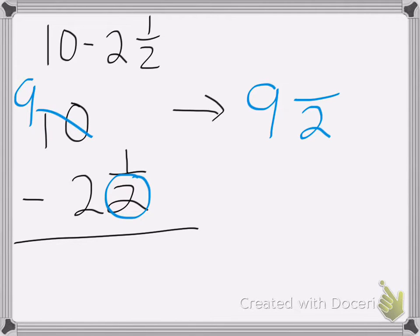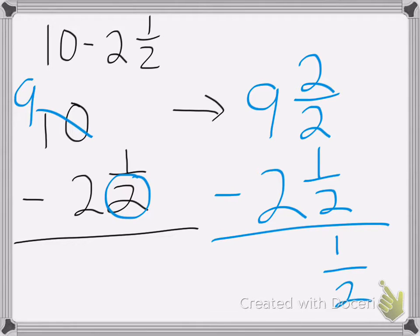When we subtract 2 halves minus 1 half is 1 half, and 9 minus 2 is 7. So my answer is 7 and 1 half.